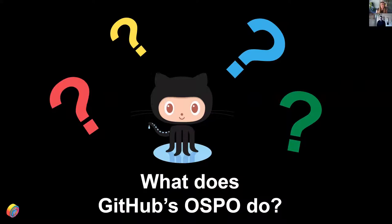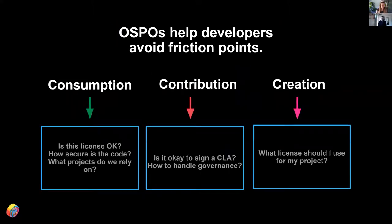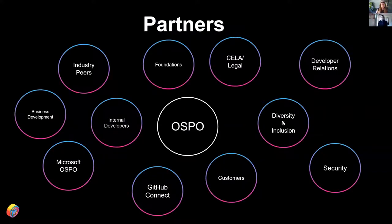We'll get started today by talking a little bit about OSPOs — not necessarily what an OSPO is, but what the OSPO does at GitHub. At the core, our OSPO helps developers to reduce friction points. We're a resource for engineers with questions about open source engagements like contributing to open source projects, signing CLAs, bringing third-party code into the company, as well as releasing new code out to GitHub. We also help with company open source strategy and policy.